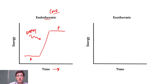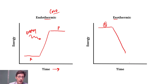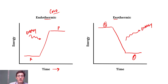Exothermic is the opposite. Exo means release, so our reactants have higher energy — higher bond energy — than our products. Energy is released, so energy drops to a lower state for our products. That energy exits the system, and these therefore have stronger bonds — they are more tightly coupled because there is less energy here.